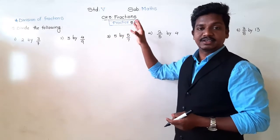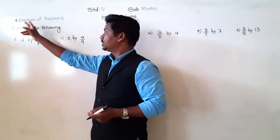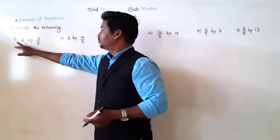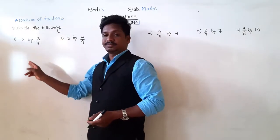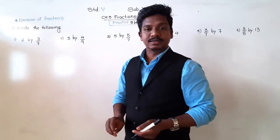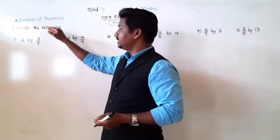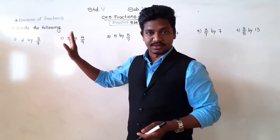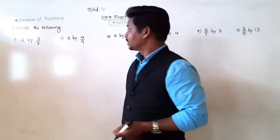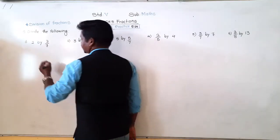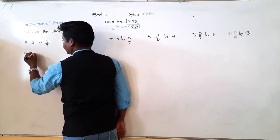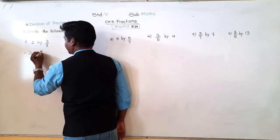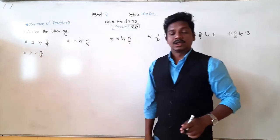Let's start. The question is: divide the following. First one: 2/3 upon 7, which means 2 divided by 3 upon 7. Let's write it in the form of division: 2 divided by 3 upon 7.